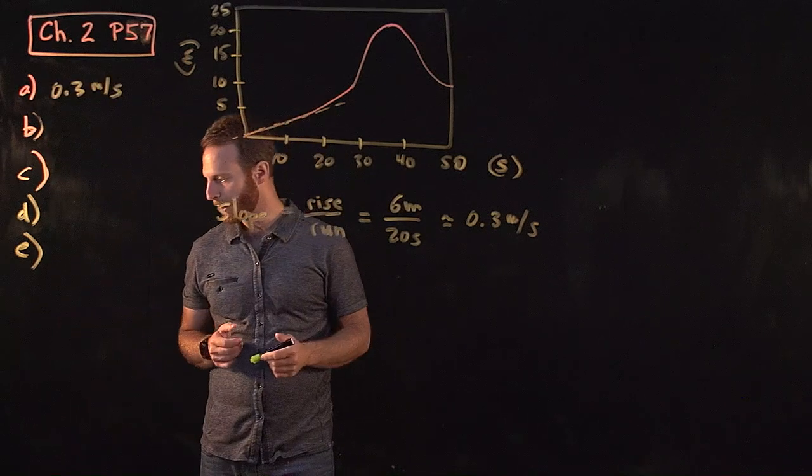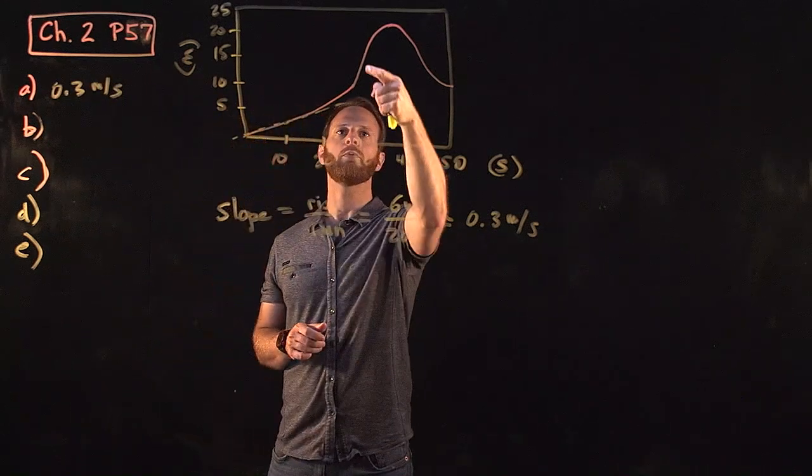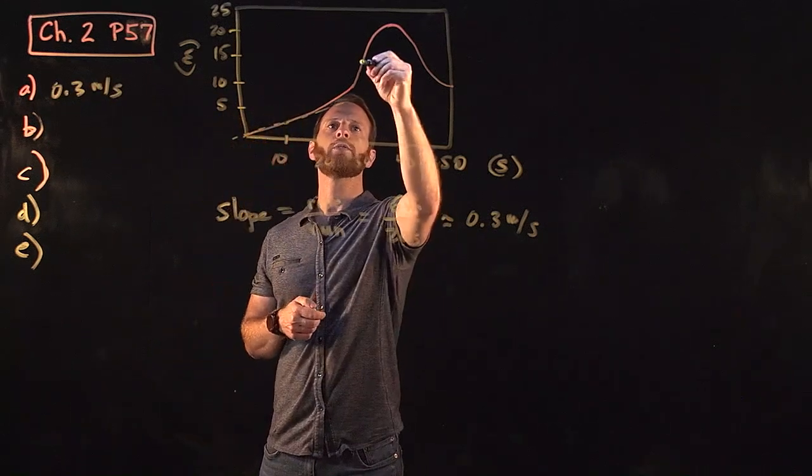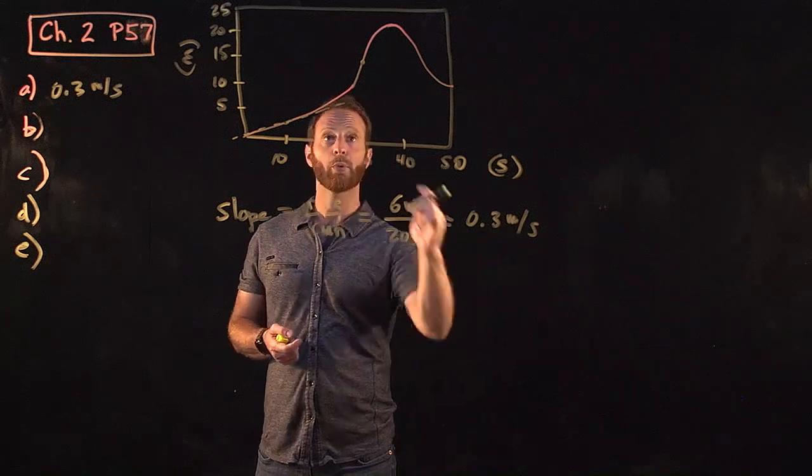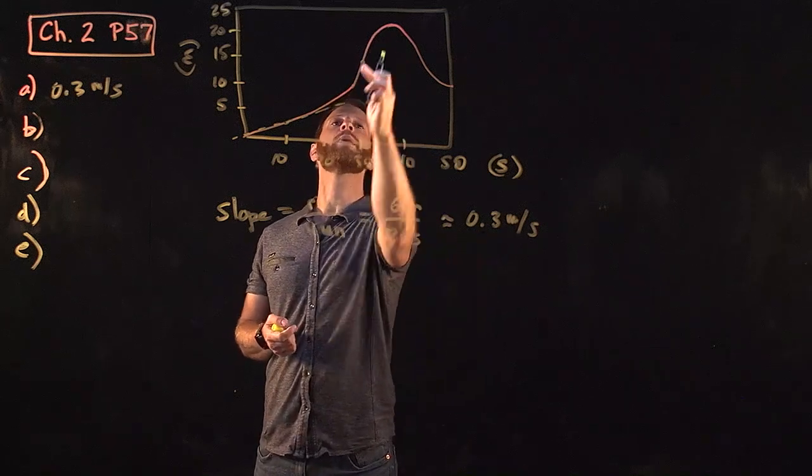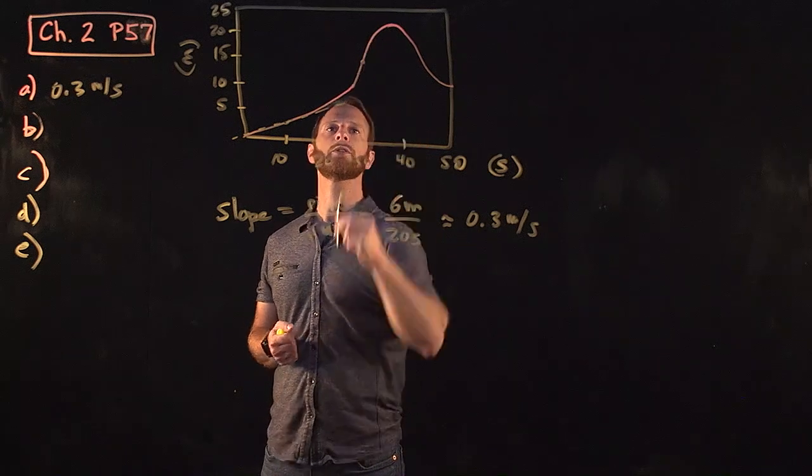Part B, we do the same thing at 30 seconds, which is more or less here. Whatever we get should be significantly bigger than 0.3. You can tell by looking at the slope anywhere along this section—it's much steeper.